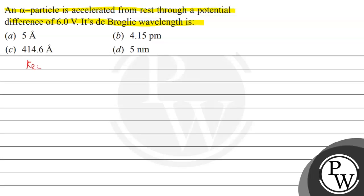Let's see the key concept of this question. What is the concept of De Broglie wavelength? According to the De Broglie hypothesis, the particle has wave nature as well as particle nature.